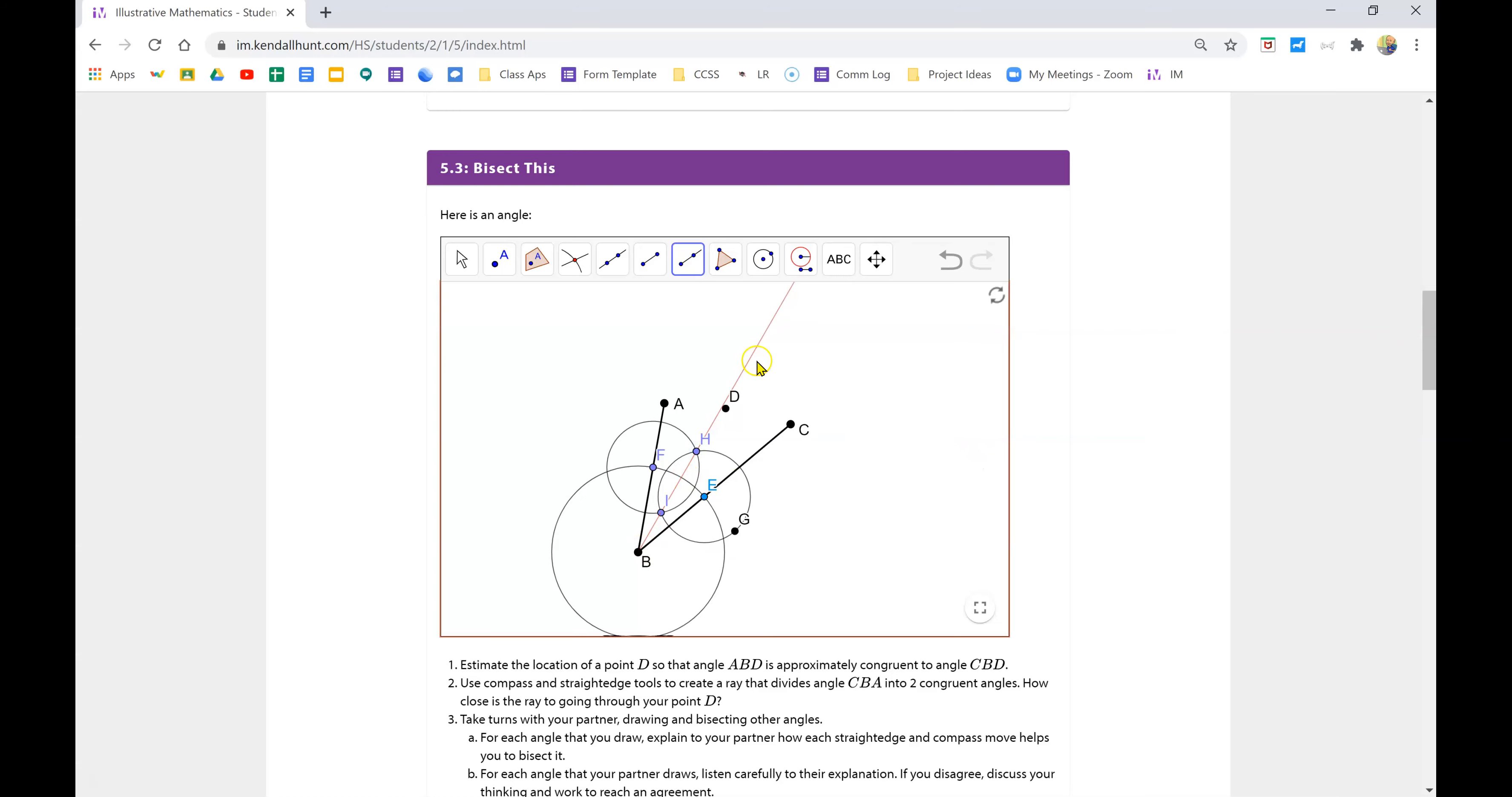And that ray that I've created by drawing those three circles answers the question of how do you use a straight edge and a compass to create a ray that splits these two angles in half. Now notice my ray that I drew is close to the point D that I created, but not exactly. And that's okay.